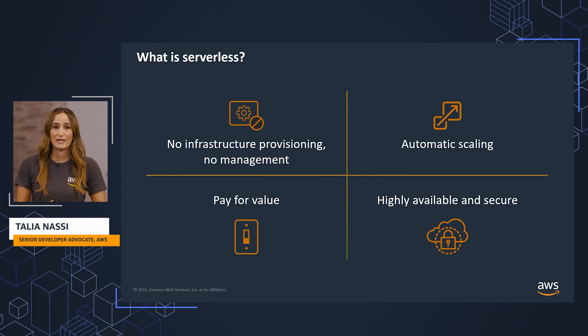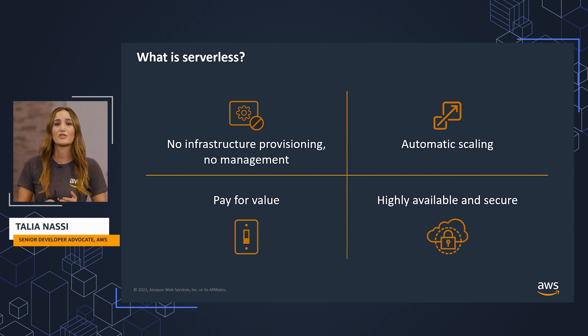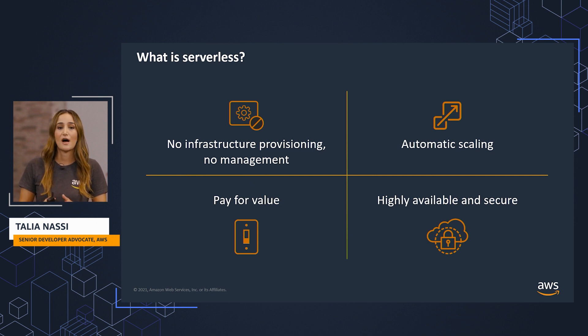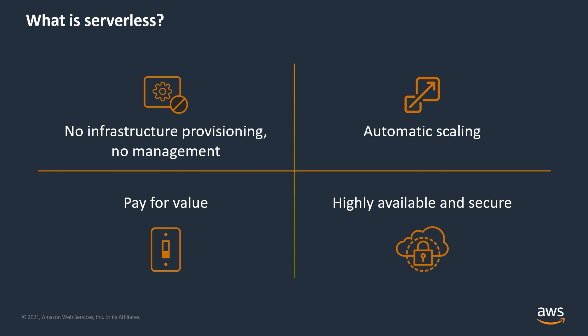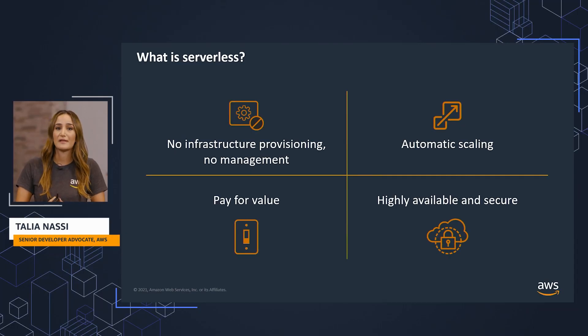DynamoDB and Lambda are both serverless. There are four tenants that define serverless as an operational model. Firstly, there is no infrastructure to provision or manage — no servers to spin up, operate, or patch, and no physical or virtual container orchestration. Second, serverless applications automatically scale by unit of consumption rather than by server unit. Automatic scaling is a big one for companies because if you overestimate the servers you need, you're throwing money away, and if you underestimate, you'll affect your application's availability.